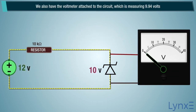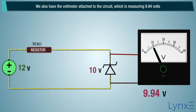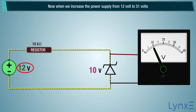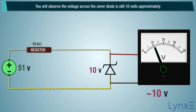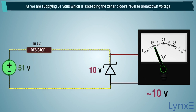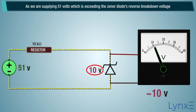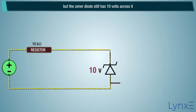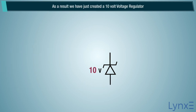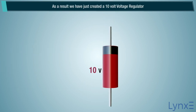We also have a voltmeter attached to the circuit, which is measuring 9.94 volts. Now when we increase the power supply from 12 volts to 51 volts, you will observe the voltage across the Zener diode is still approximately 10 volts. As we are supplying 51 volts, which exceeds the Zener diode's reverse breakdown voltage, the Zener diode still has 10 volts across it. As a result, we have just created a 10 volt voltage regulator.